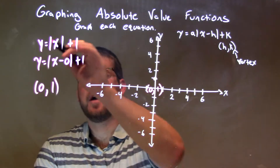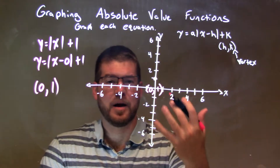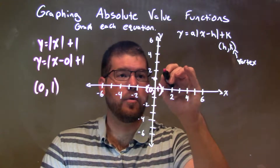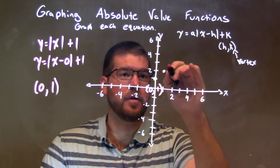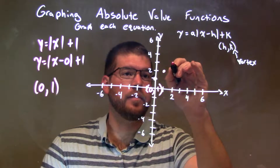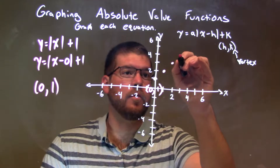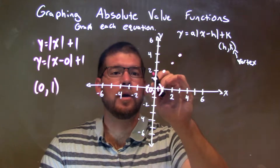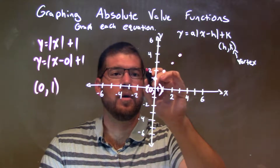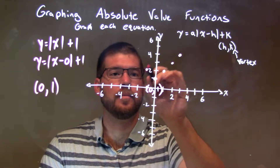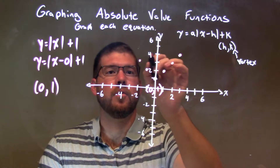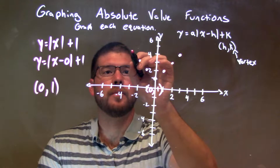Our a value up front is a positive one — that's our slope. So we just go up one over one here, up one over one, one over one. And we mirror that left: up one to the left one, up one to the left one, up one to the left one.